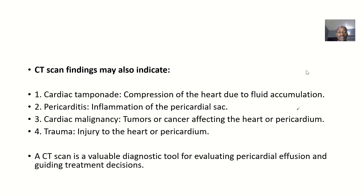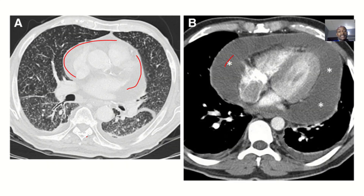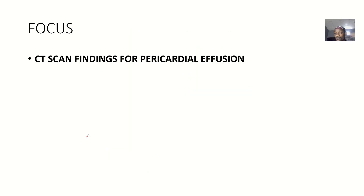CT scan findings may also indicate cardiac tamponade — that's compression of the heart due to fluid accumulation. Additionally, it can indicate pericarditis, that's inflammation of the pericardial sac. You can also see if there's a cardiac malignancy — that's tumors or cancers affecting the heart or pericardium. It can also show trauma, if there's an injury to the heart or pericardium. So those are the CT scan findings for pericardial effusion.